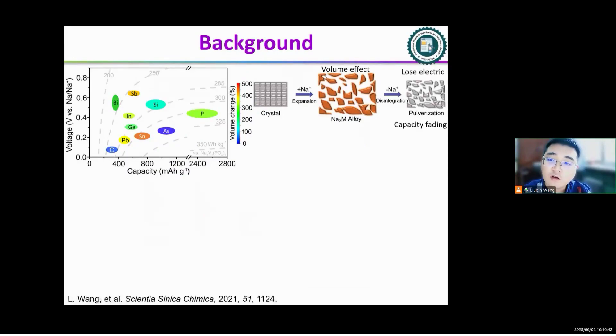However, the volume effect of alloying anode is huge during discharge progress, which may cause a loss of electrical contact with the current collector and cause the active electrode material pulverization. Then, the capacity is faster fading.